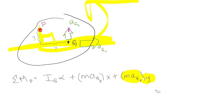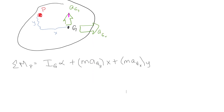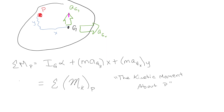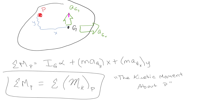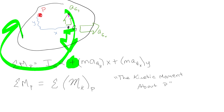This quantity is called the kinetic moment about P. Hibbler uses a curvy M notation for it. It's one of those things where if you have a formula sheet on a test, the formula is there but it doesn't always feel intuitive. Note that if the acceleration pointed the other way, the sign would flip because it would produce a negative moment going into the page.